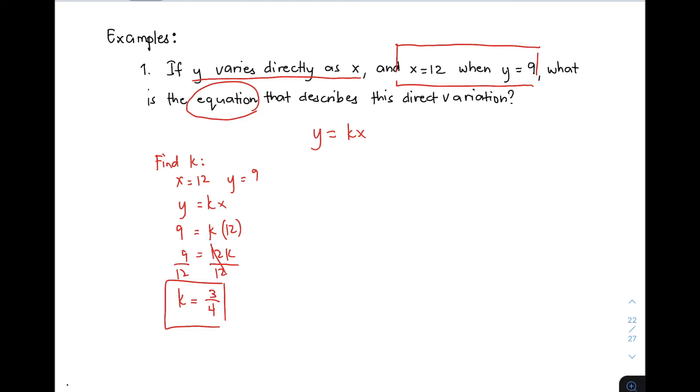We are asked for the equation. Simply use the formula Y is equal to KX. We know K is 3 over 4. Substituting the constant of variation, you get Y is equal to 3 over 4 X, or Y equals 3X over 4. This is the equation that describes the direct variation.